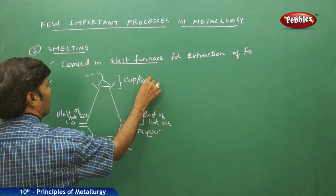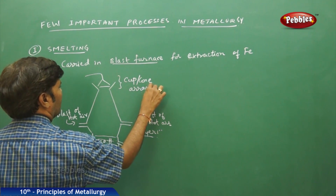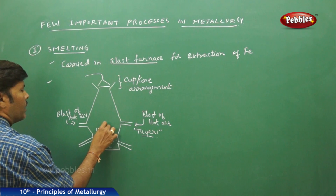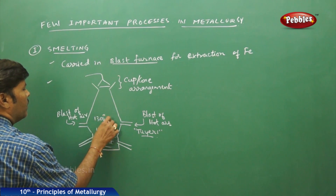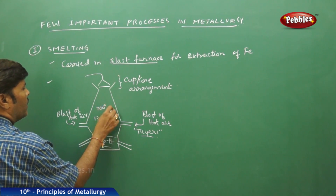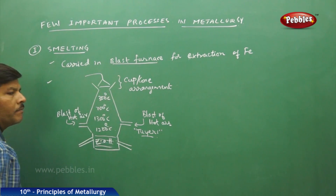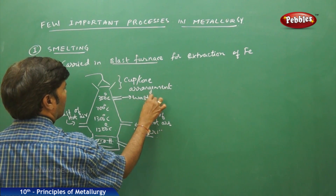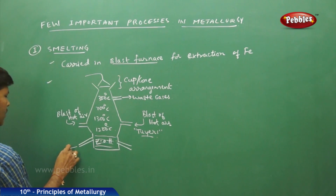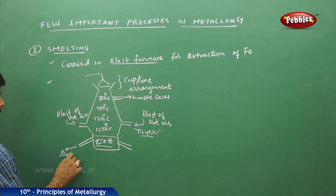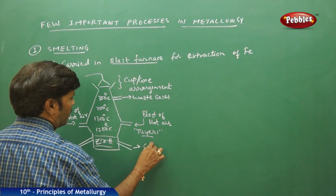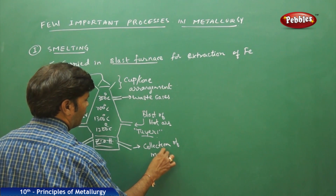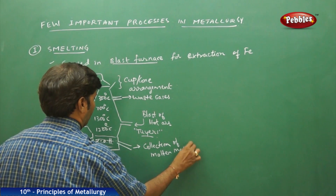The temperature zones begin at 1200 degrees centigrade, then 1300 degrees centigrade, 700 degrees centigrade, and 300 degrees centigrade. There is a small outlet for escape of waste gases, and outlets for removal of slag and collection of molten metal.